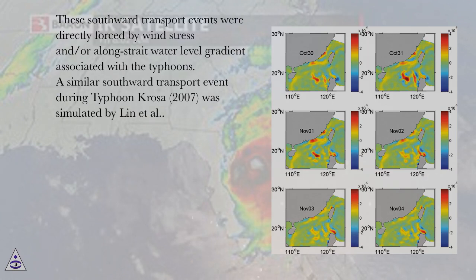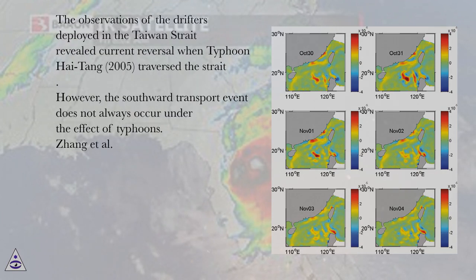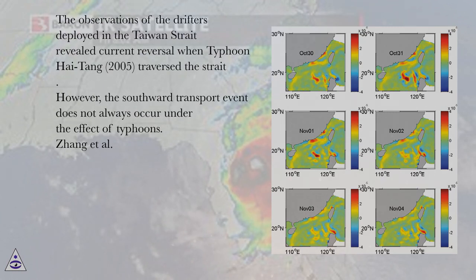A similar southward transport event during Typhoon Krosa, 2007, was simulated by Lin et al. The observations of the drifters deployed in the Taiwan Strait revealed current reversal when Typhoon Hai-Tang, 2005, traversed the strait. However, the southward transport event does not always occur under the effect of typhoons.